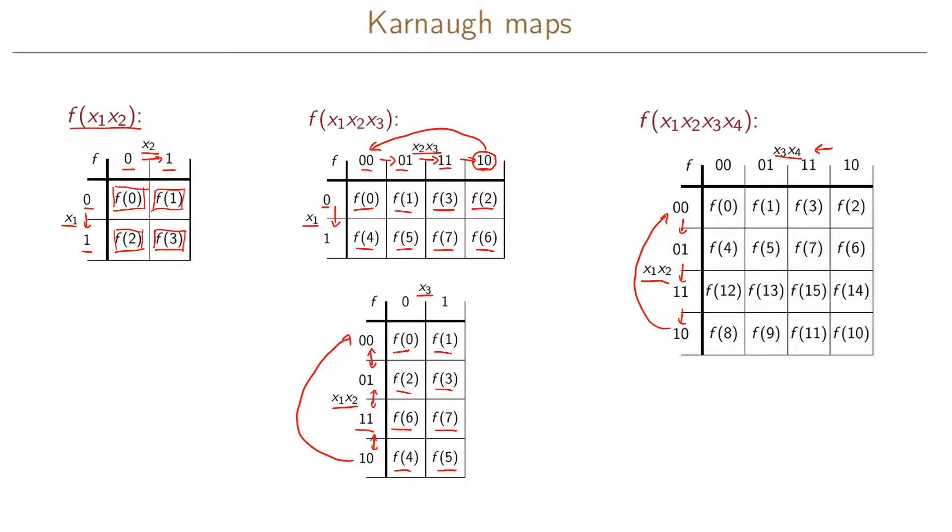And here what we see is that when we put our values into our Karnaugh map, we have f of 0, f of 1, then we jump over to the next one to have f of 2, and then we go back to f of 3, 4, 5, 6, and 7. And then we go to that last row to get 8, 9, 10, and 11. And we go back to the second last row because this has the 11 where we have f of 12, 13, 14, and finally f of 15.